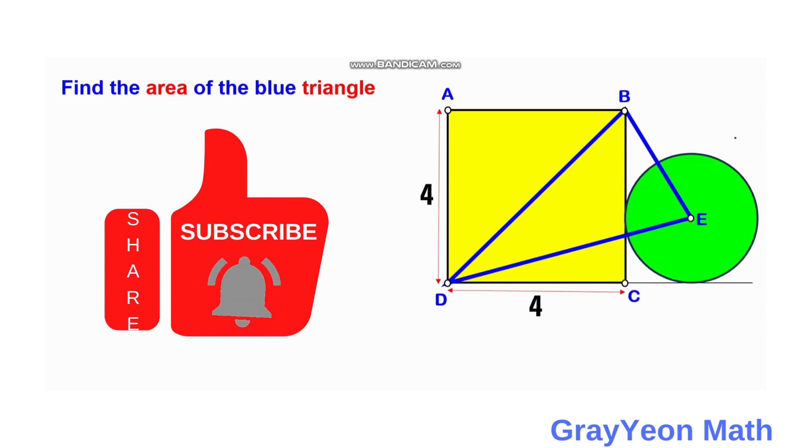Welcome to GraeionMath. We are asked to solve this problem. We have a square and beside the square is a circle, and from point B to the center of the circle a segment is drawn, and from point D to the center of the circle a line is drawn, therefore forming this blue triangle. The length of the square, the dimension of the square is 4 units for each side, and we are required to find the area of the blue triangle.